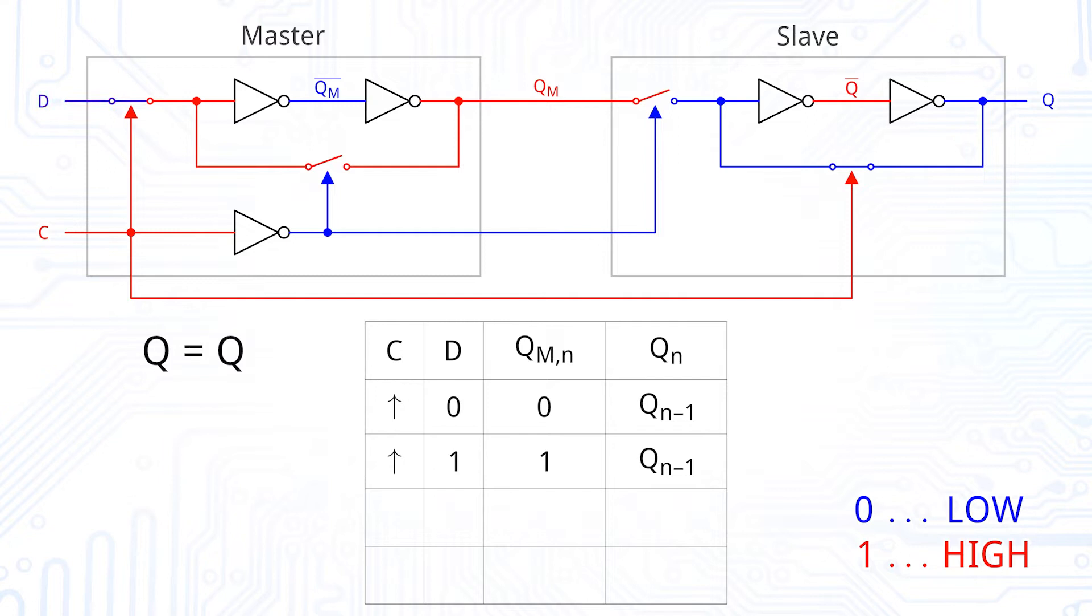When the clock signal goes from high to low, the master saves the last value of D. So QM equals D and the slave becomes transparent, which means Q equals QM equals D.